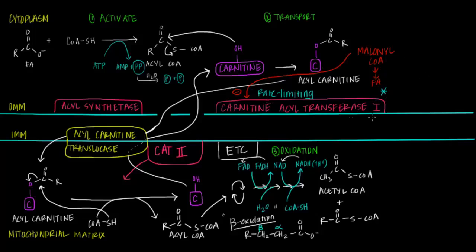By using a substrate in fatty acid synthesis to regulate an enzyme in fatty acid oxidation, the body has essentially made these two processes mutually exclusive. When one is on — when there's a lot of malonyl-CoA — oxidation is turned off. The body doesn't want to be in a gray zone: it either wants to produce a net amount of fatty acids for storage, or break them down to extract ATP. Having these compartments makes this regulation elegant: by regulating oxidation at the transport step, we literally keep these reactions separate in different compartments — a great way to control whether something is on or off.